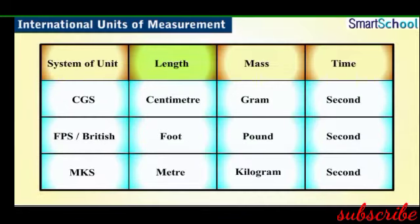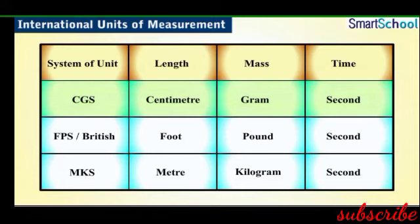Until recently, three major systems of units were in use in different countries based on three fundamental quantities: length, mass, and time. Among these were the CGS system, which stands for centimeter, gram, and seconds, and FPS, which stands for foot, pounds, and seconds. These units were adapted by Britain and hence the system is referred to as the British system.